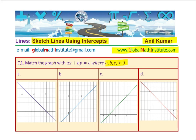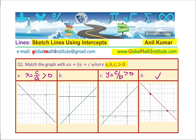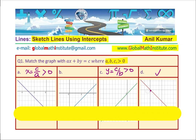Question one: ax plus by equals c, all positive. The x-intercept is c divided by a and the y-intercept is c divided by b. Since all values are positive, both intercepts are greater than zero. That means we are looking for a graph where the line crosses both positive axes, forming a triangle in quadrant one. Therefore option D is the right answer.